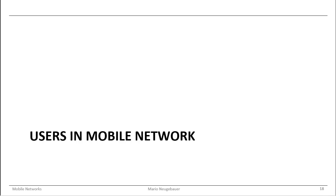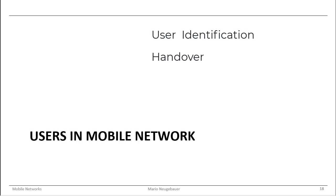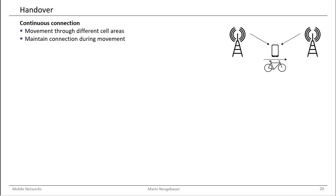The aspect of users in a mobile network is divided into three main parts. The first part is the question of how to identify users, the second is how to do the handover, and the third is how to register users and how to maintain the user base in the network.